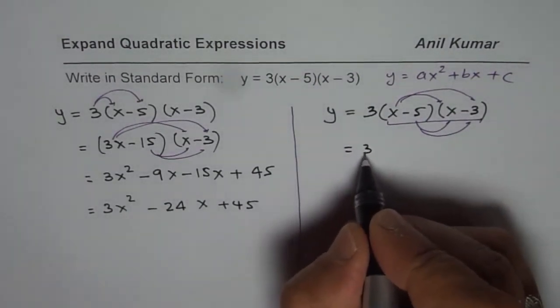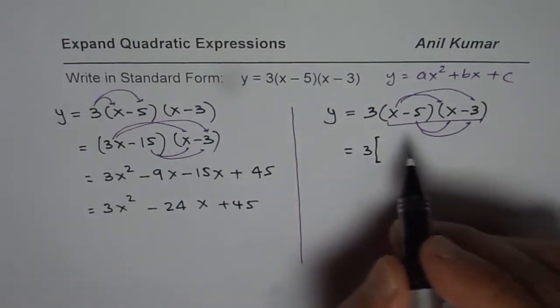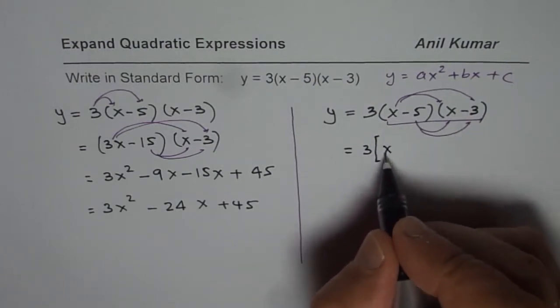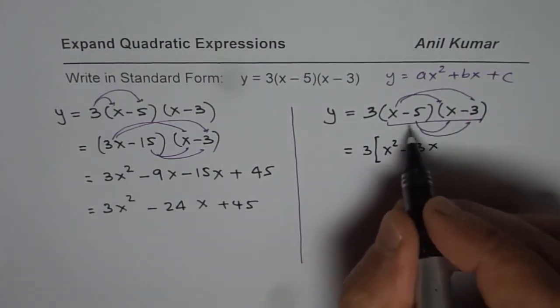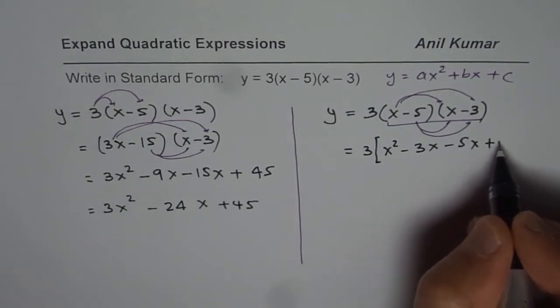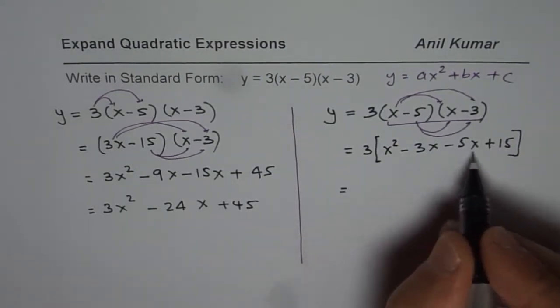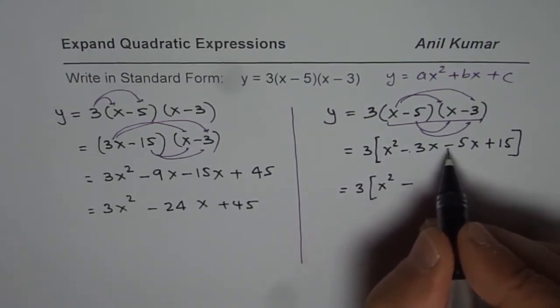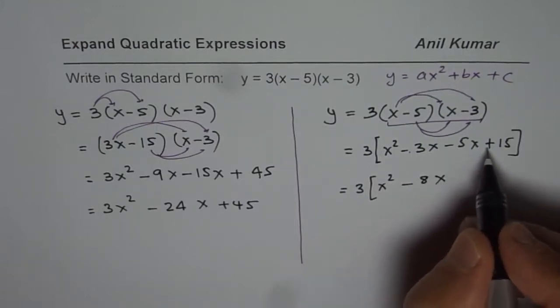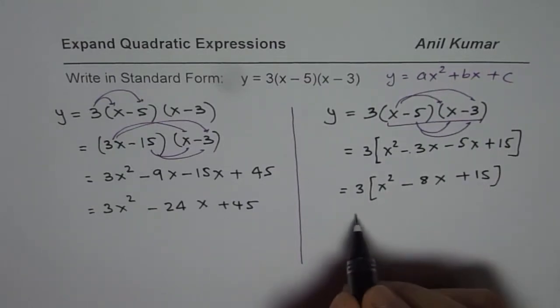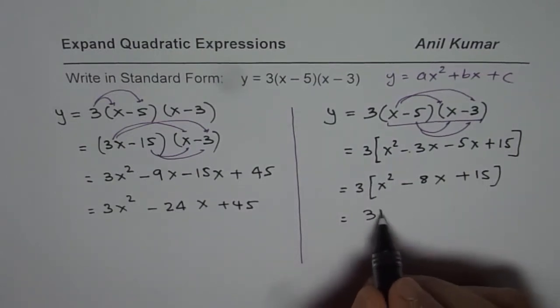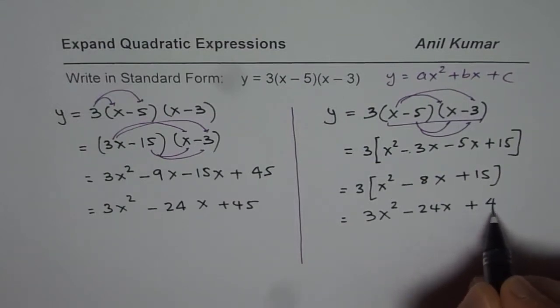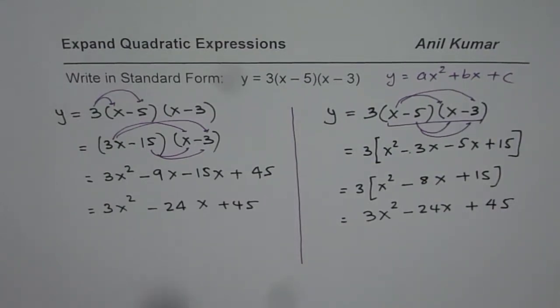x times x is x square minus 3x minus 5x plus 15. Now we can combine the terms. We have 3 times x square minus 3 and minus 5 is minus 8x. And then we have plus 15. And now we can multiply by 3. Open this bracket. So we get 3x square minus 24x plus 45. So that is exactly the same as we got earlier.